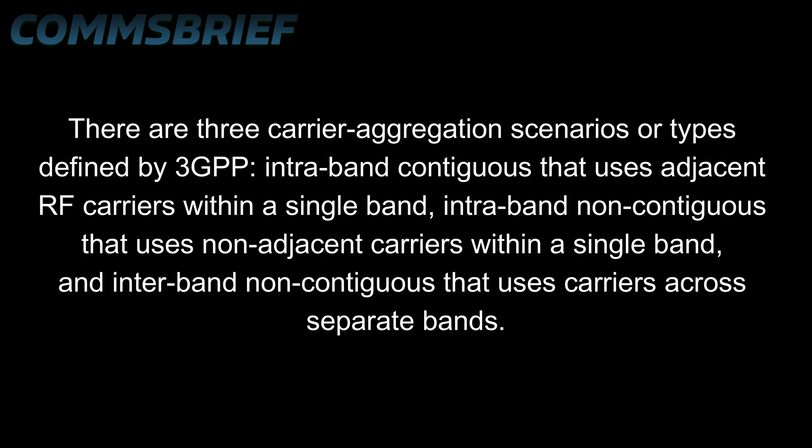Now let's look at the scenarios or types of carrier aggregation in 4G LTE networks. There are three types defined by 3GPP: intraband contiguous, which uses adjacent RF carriers within a single frequency band; intraband non-contiguous, which uses non-adjacent carriers within a single band; and interband non-contiguous, which uses carriers across separate frequency bands.